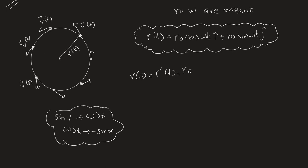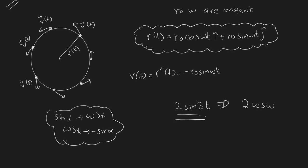The derivative of cos(ωt) is negative sin(ωt), and by the chain rule we must multiply by the derivative of the inside function ωt, which gives ω. For example, the derivative of sin(3t) is cos(3t) multiplied by 3, giving 3·cos(3t). You must always multiply by the derivative of the inner function.